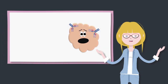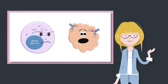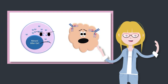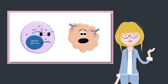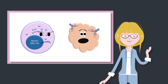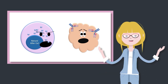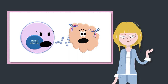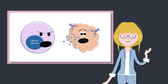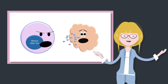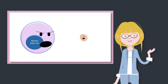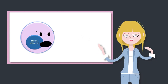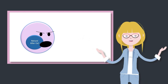Natural killer cells, as the name suggests, have the ability to kill cells, and they do this in a very similar way to cytotoxic T cells. They use their granules containing noxious agents to inflict cell death. And they do this in two specific circumstances.